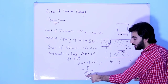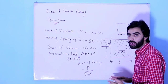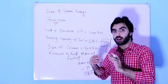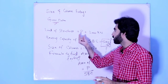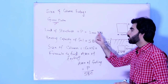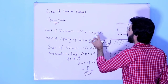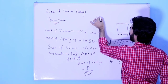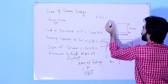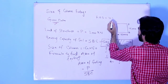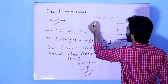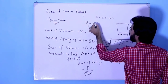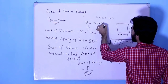First, we will apply a factor of safety. We will increase the load by 10 percent as the factor of safety. So we calculate 0.1 multiplied by 2000, which equals 200. We then add this to the original load.